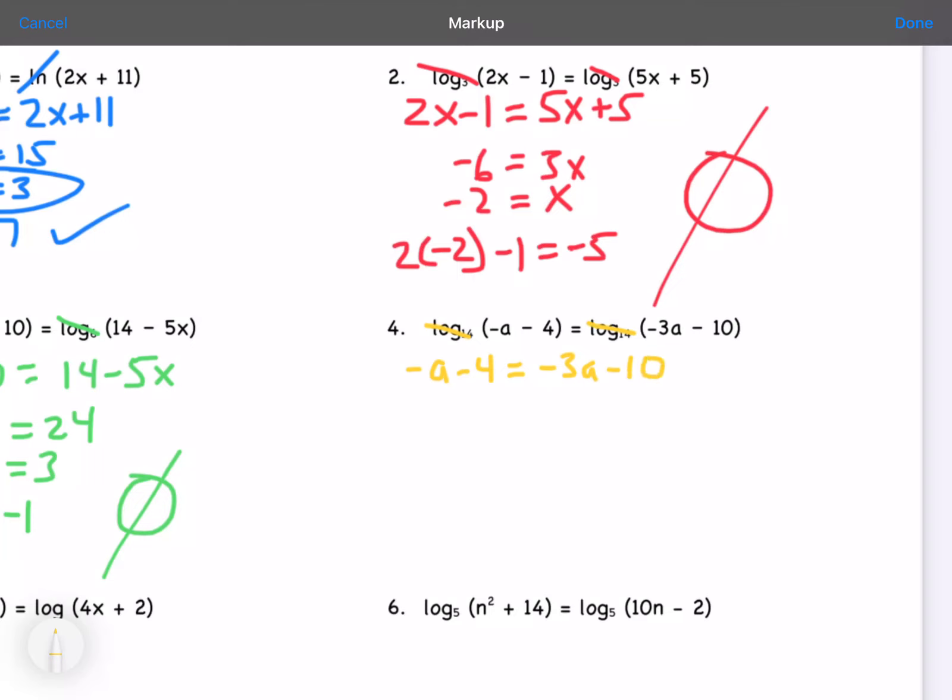So when I work this out, I'm going to have 2a equals negative 6, or a equals negative 3. When I plug that in, the opposite of negative 3 minus 4 is 3 minus 4, or negative 1. So 3 in a row, I have no solution because I'm ending up with a negative inside my logarithm.